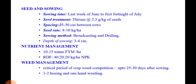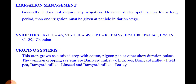Weed management: the critical period of weed competition is up to 25 to 30 days after sowing. One to two mechanical weedings and one hand weeding are sufficient to control weeds.